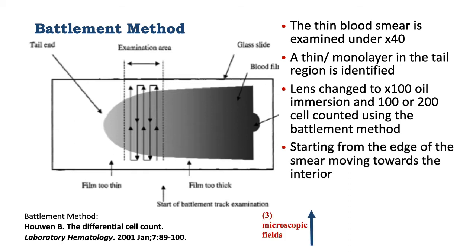You start from the edge of the smear moving towards the interior, because leukocytes are not distributed uniformly throughout the smear. Some parts like the body have a concentration of lymphocytes. The edges have a concentration of polymorphs — the neutrophils, eosinophils, and basophils — while the tail may have the monocytes.